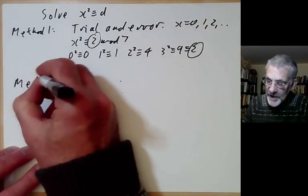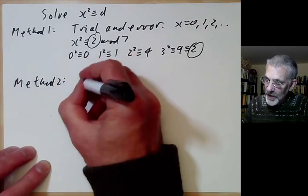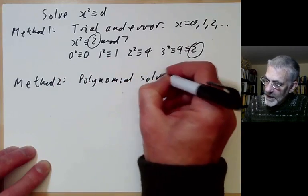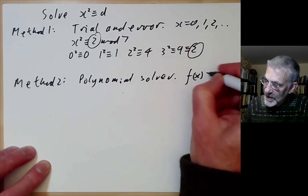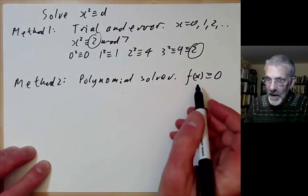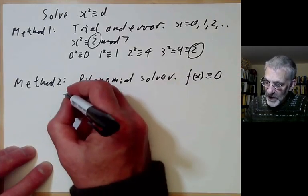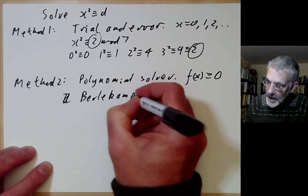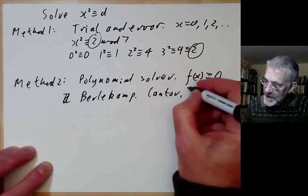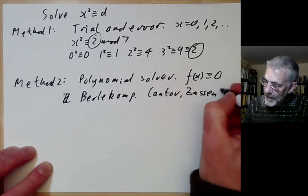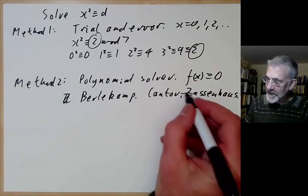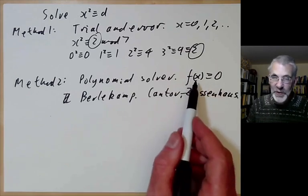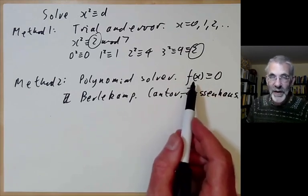Method 2 is a polynomial solver. There are several methods that will solve any polynomial f(x) ≡ 0 mod p. The first was found by Berlekamp, and another by Cantor and Zassenhaus. In the next lecture we will discuss the Cantor-Zassenhaus method. These will actually find roots of any polynomial mod p rather fast.